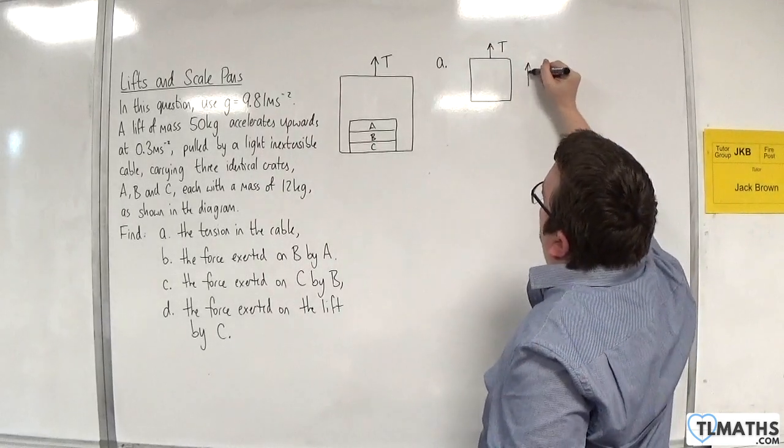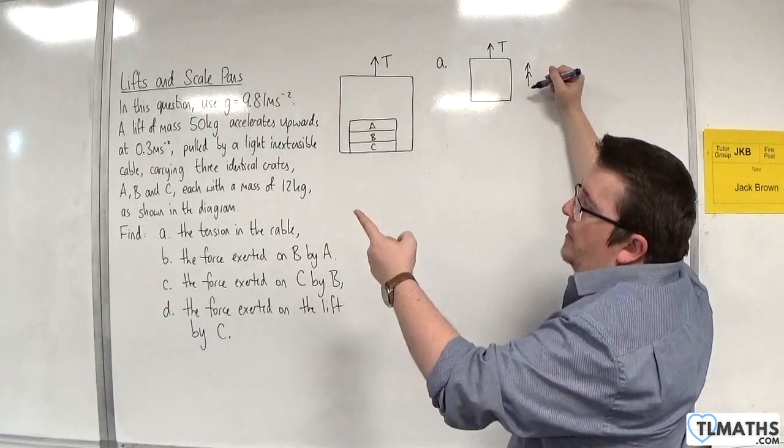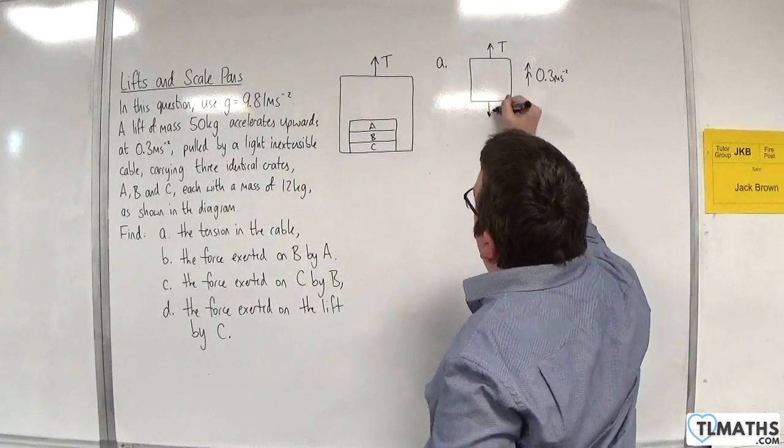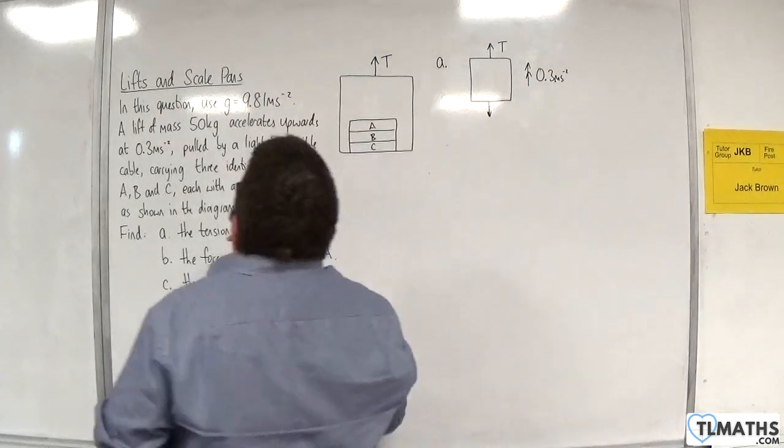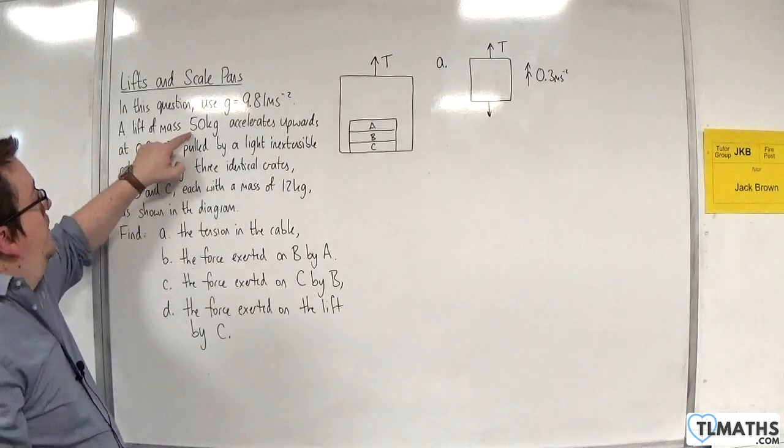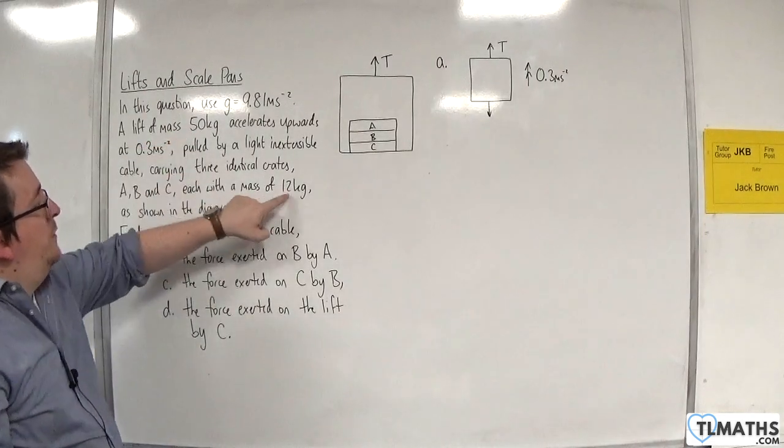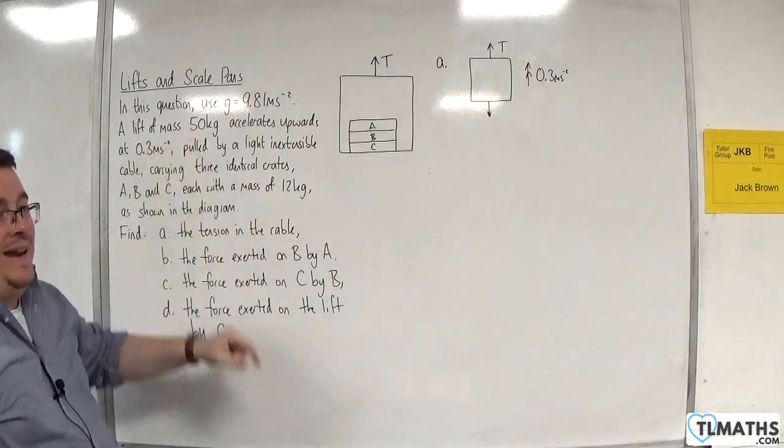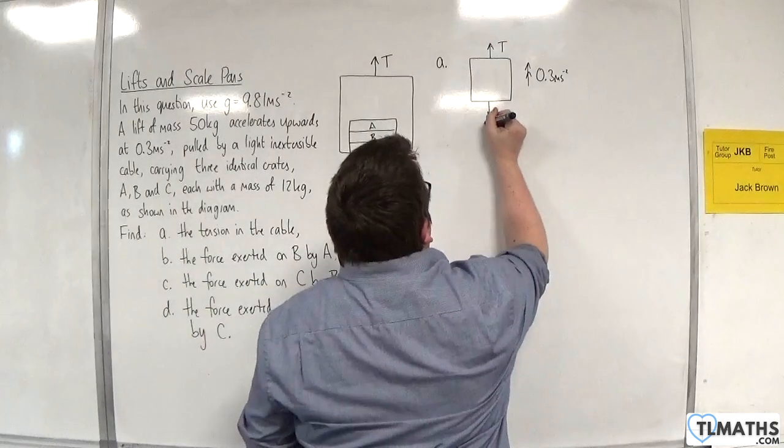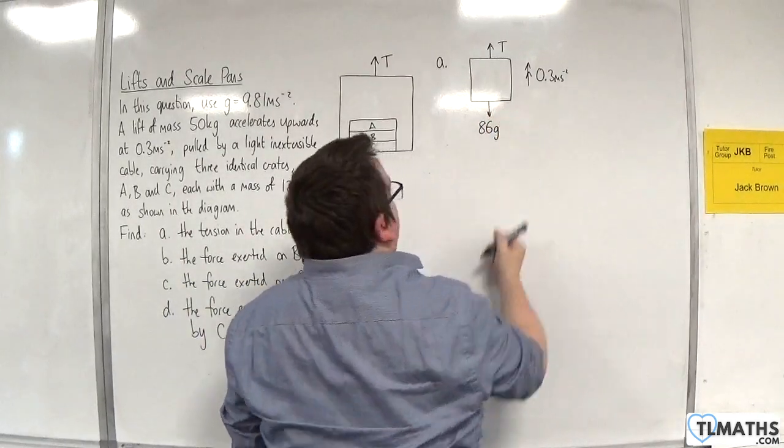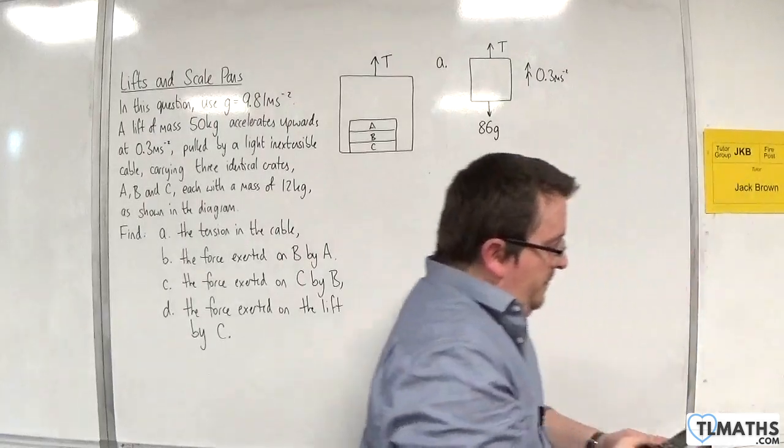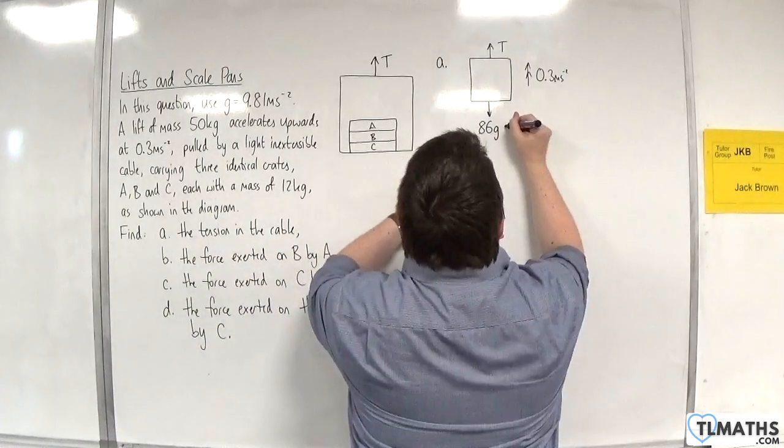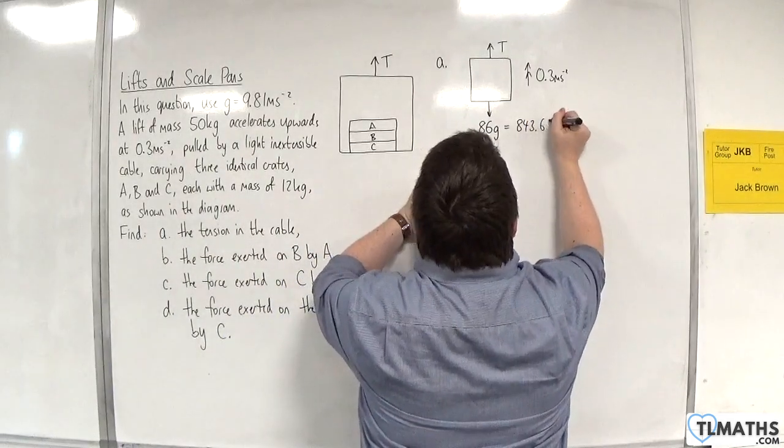And it is accelerating upwards at 0.3 metres per second per second. Now, what about the weight? Well, the weight will be, we're going to have a mass of 50 kilos, and we've got the three masses of 12 kilos each. So we've got 36 plus 50, so 86 in total. And so it will have a weight of 86g. Now, g here is 9.81, so 86 times 9.81 is 843.66 newtons.